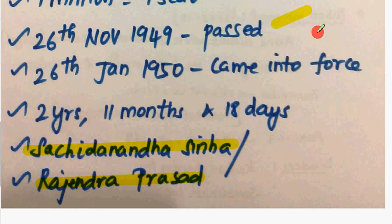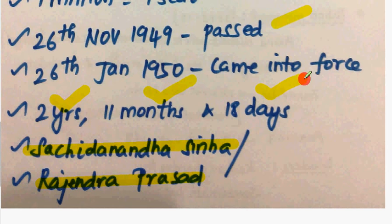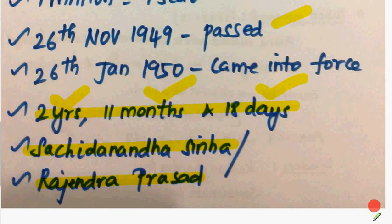On 26th November 1949, provisions related to citizenship and elections came into effect. This relates to the Provincial Parliament. The most important thing is the Citizenship elements. Overall, our Constitution marks its first year of operation.